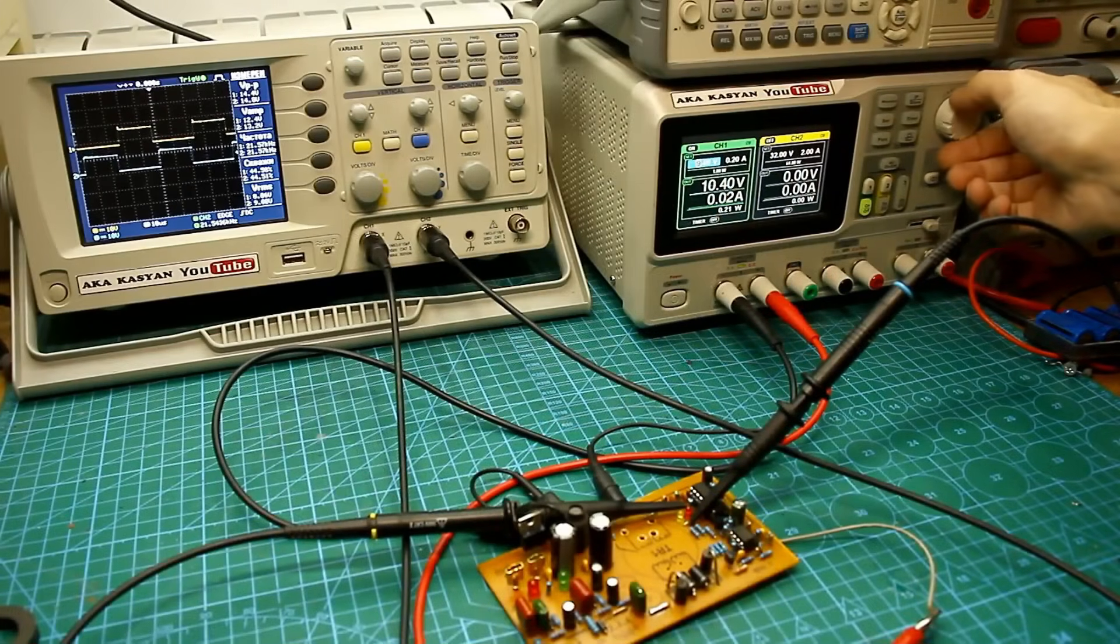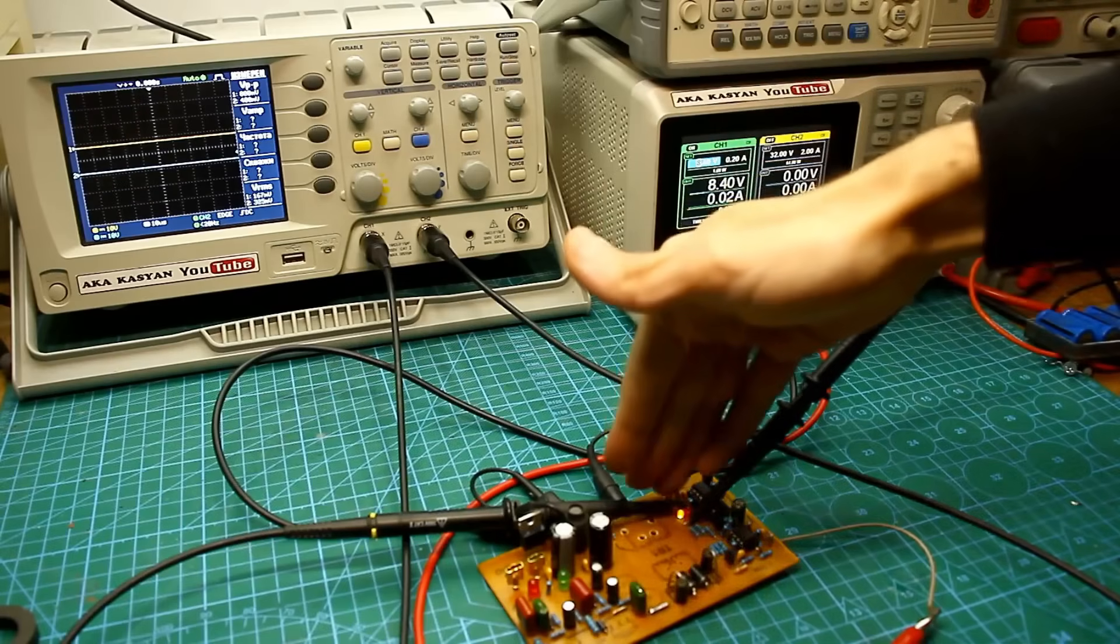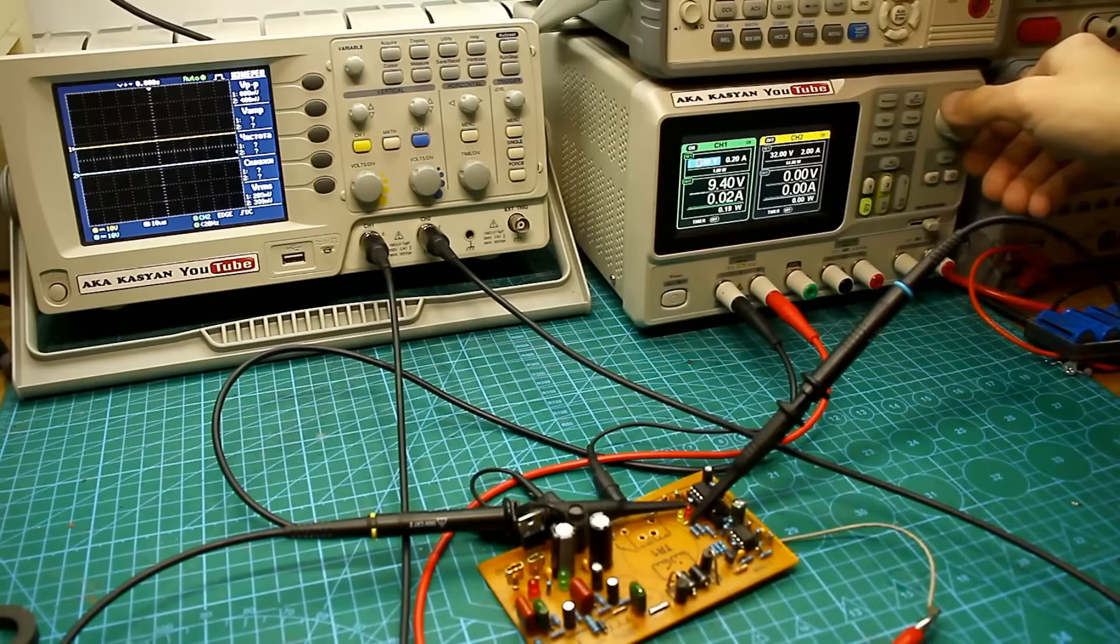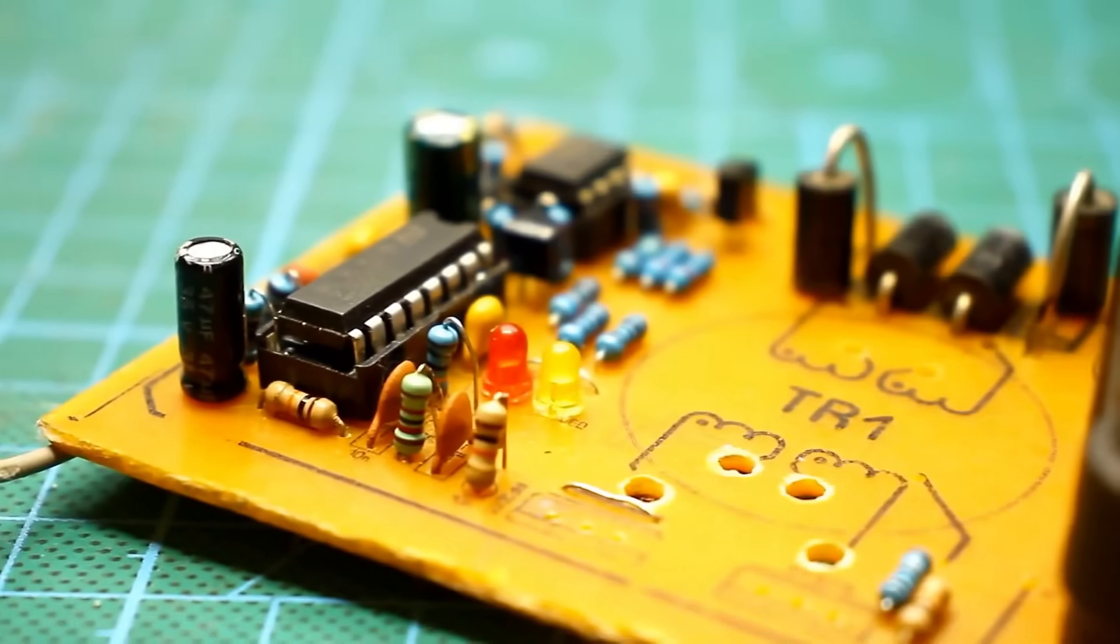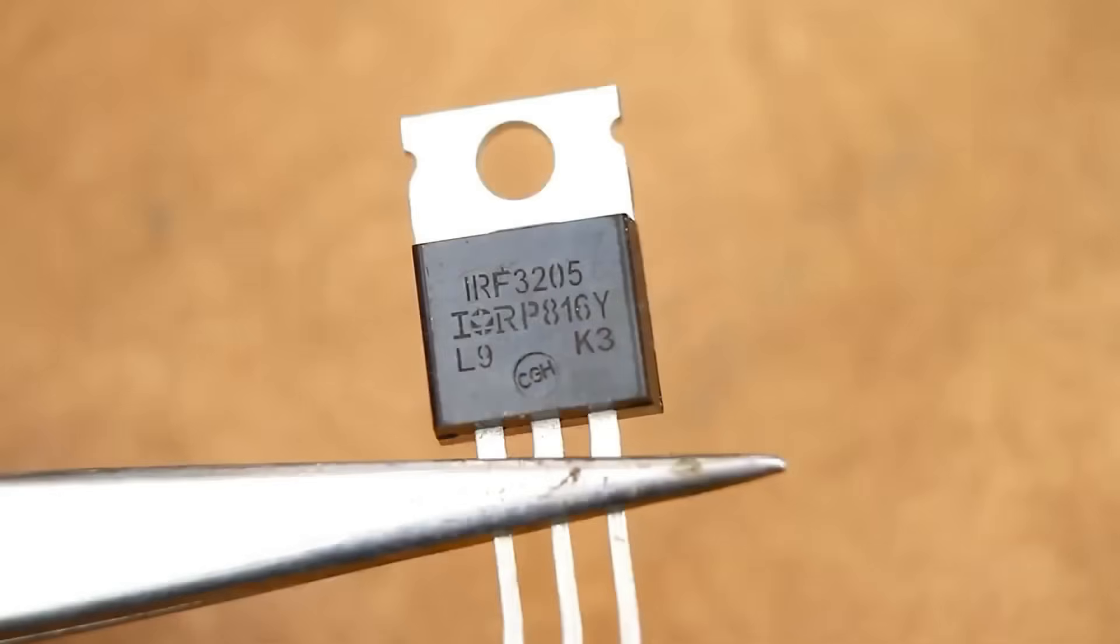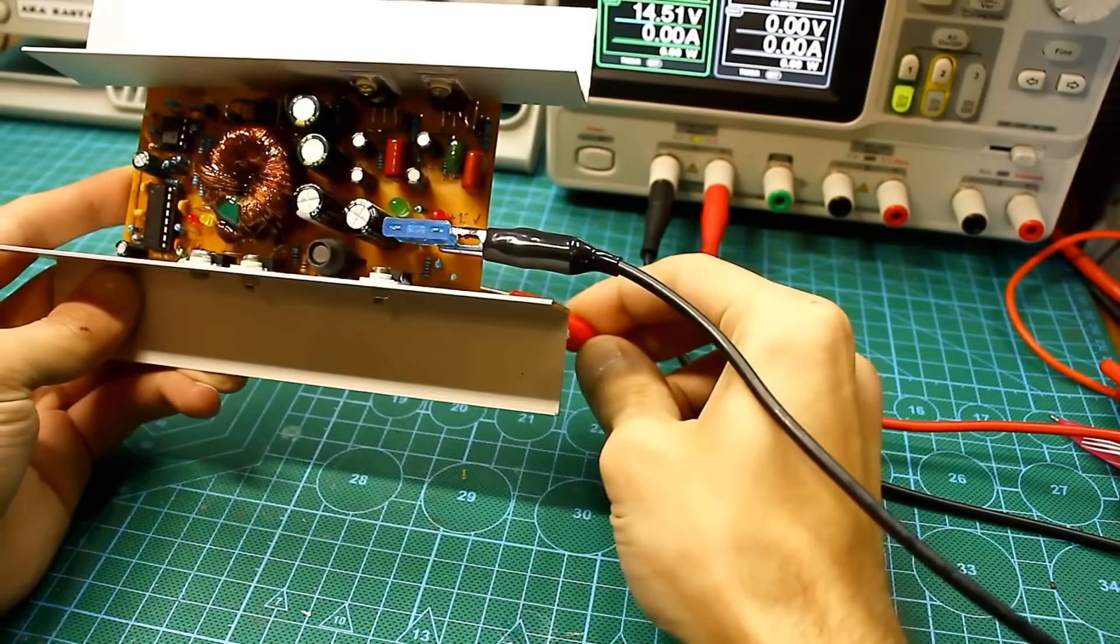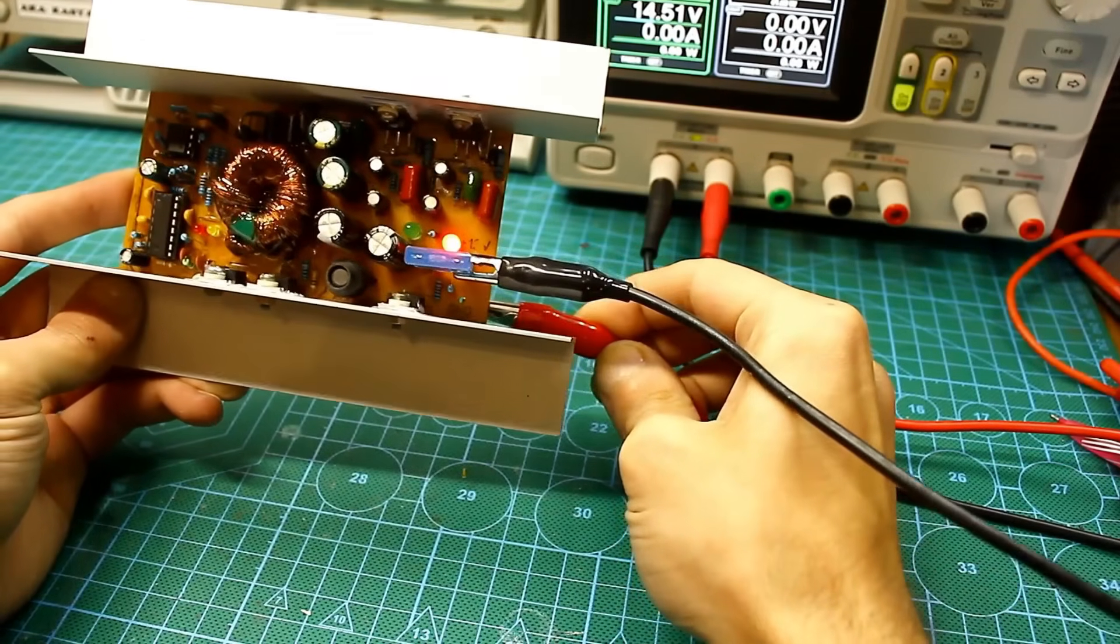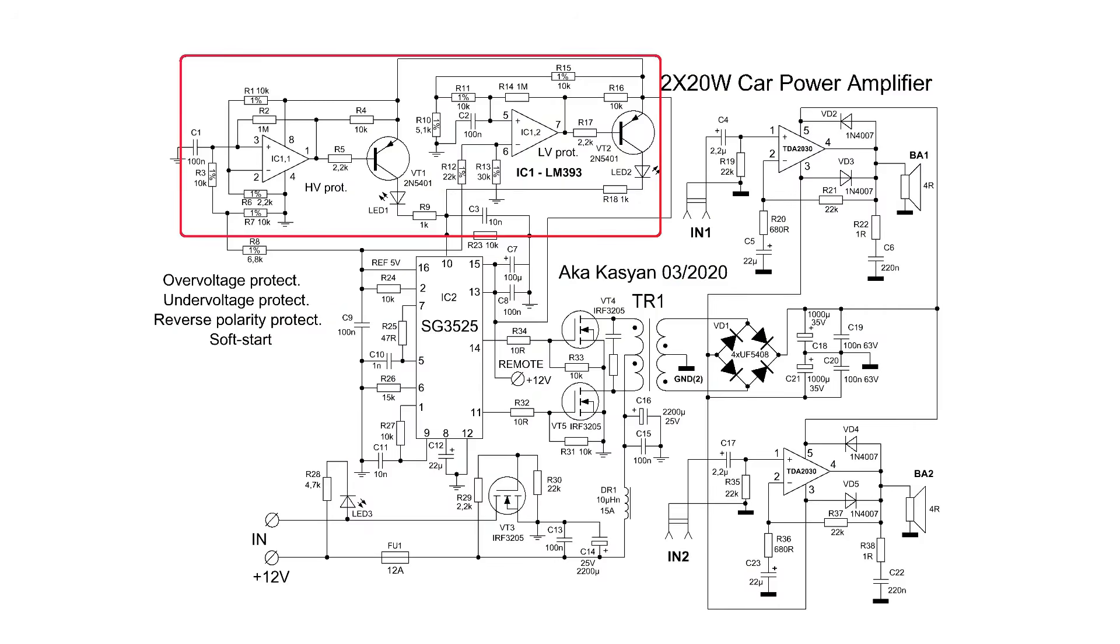The under-voltage protection will prevent the amplifier from completely draining your battery and will shut off the system if the battery voltage is below a certain level. This protection is also necessary for the correct operation of the inverter, as at low supply voltages it will operate abnormally, which can cause the power transistors to overheat and fail. All protections automatically reset if the factor that triggered them is eliminated. By the way, the last two protections have a hysteresis for activation. What it is and why it's needed I'll explain a bit later.